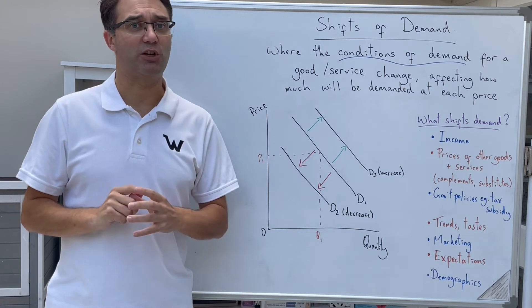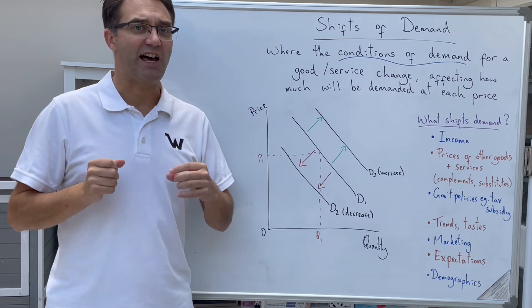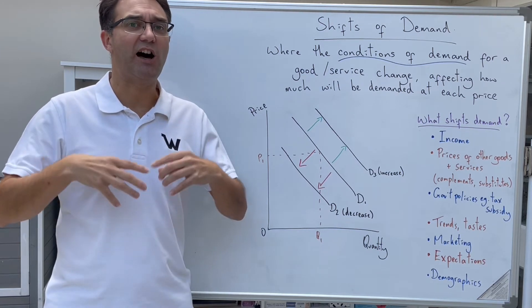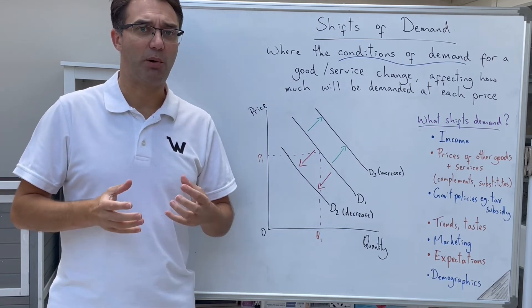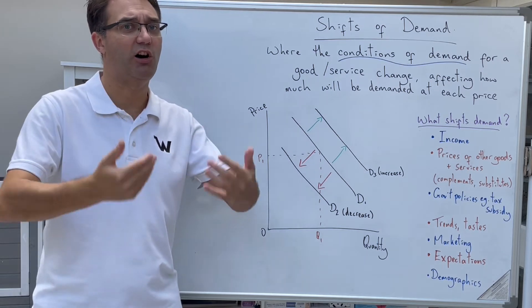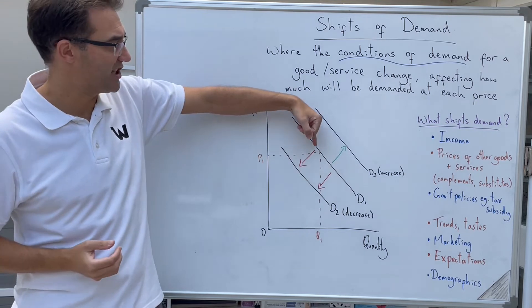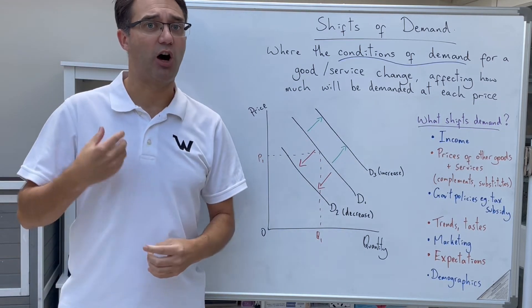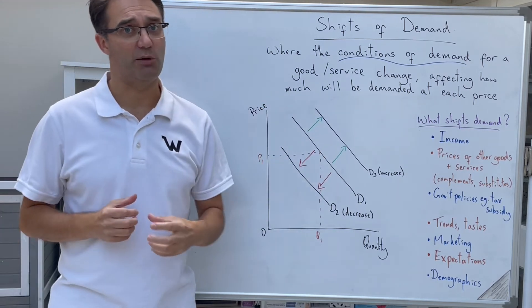That's not true for every good. Some goods are what we call inferior, and that means that as people's incomes increase, they will switch to buying other, better goods or services. So rather than maybe buying own brand supermarket baked beans, they might switch to Heinz instead. So one good, Heinz, might see an increase in demand as incomes rise, while another good, own brand beans, would see demand fall as incomes rise.